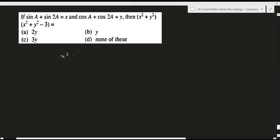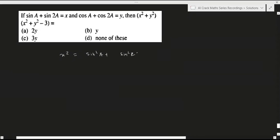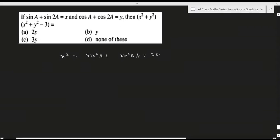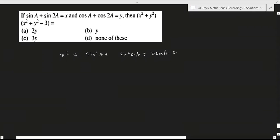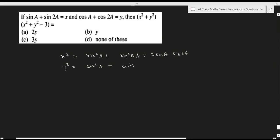So let's write x squared first. x squared becomes sin squared a plus sin squared 2a plus 2 sin a sin 2a. Y squared becomes cos squared a plus cos squared 2a plus 2 cos a cos 2a.